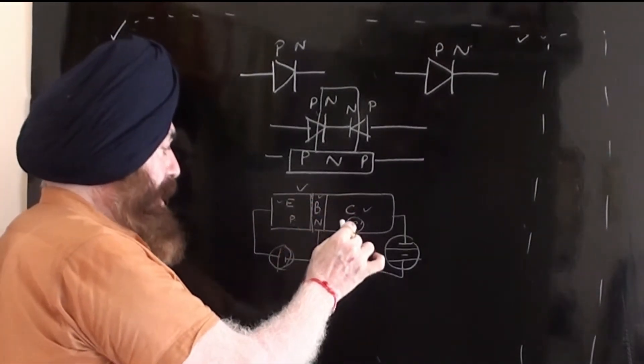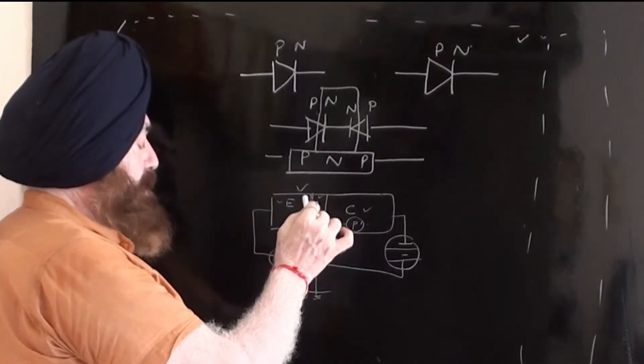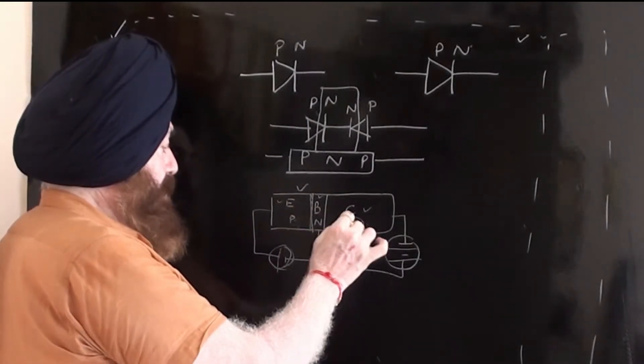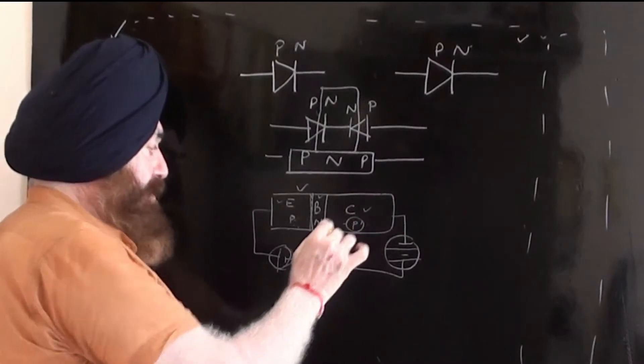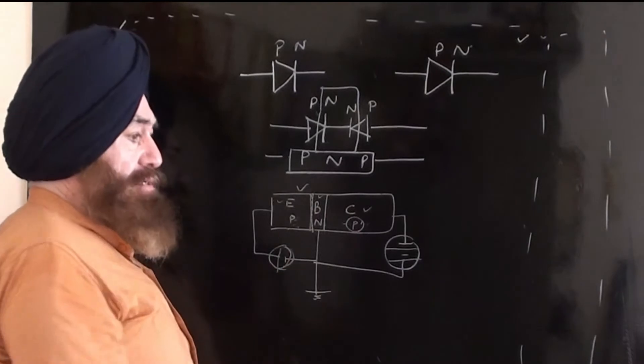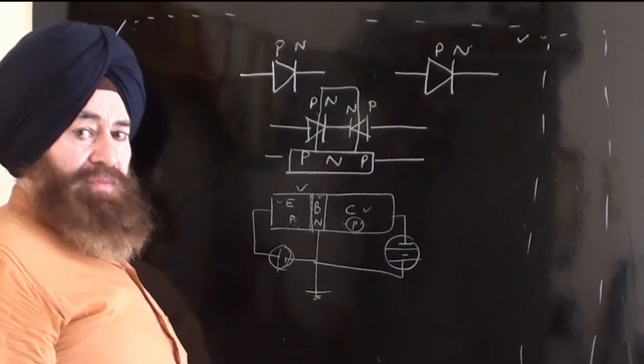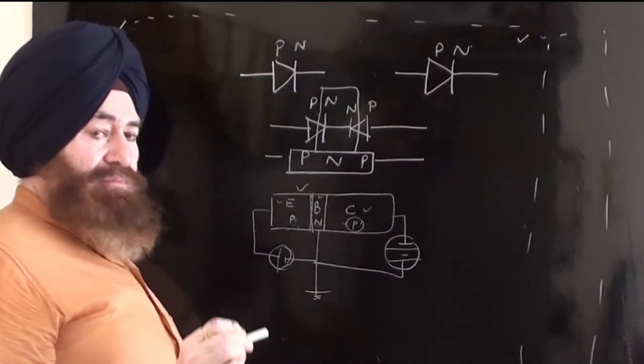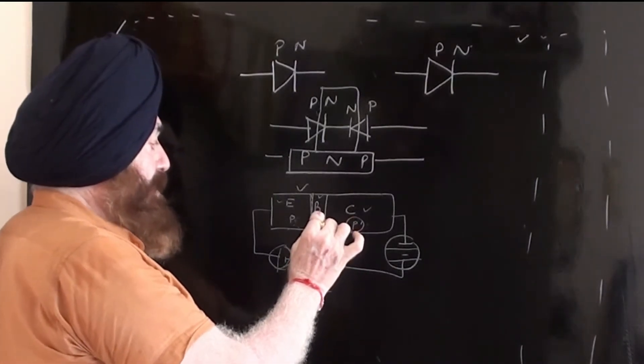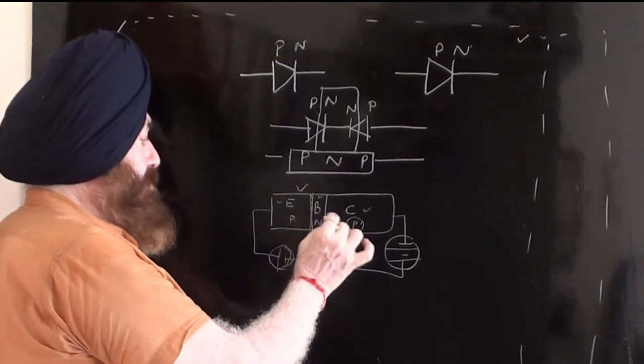The current is flowing from emitter to collector, from low resistance to high resistance. When the emitter carriers start from here and they are flowing to collector, reaching to collector through the base, in the base region, because the majority carriers are the holes in emitter, when they reach in the base, some of them get neutralized by the electrons which are present in the base, and rest of the holes they reach the collector.